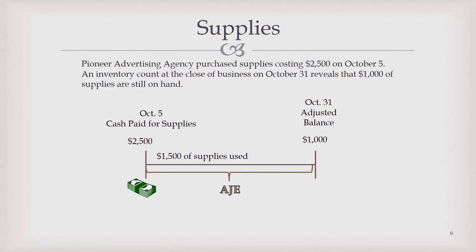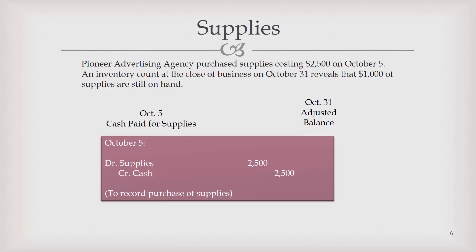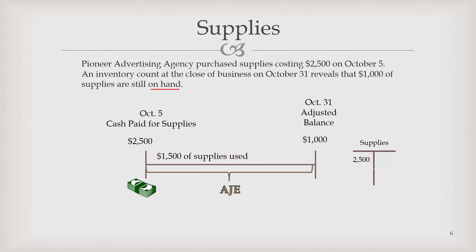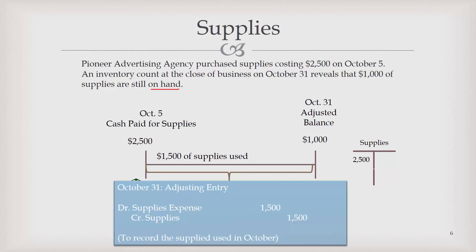Let's look at supplies. Pioneer Advertising Agency purchased supplies costing $2,500 on October 5th. On that date, they would have debited supplies and credited cash — supplies is an asset. Then on October 31, they counted and found they still have $1,000 worth of supplies on hand, meaning those are the supplies sitting in the supply closet that have not been used. We need to adjust the asset down to $1,000, which means they used up $1,500 worth of supplies during October. Our adjusting entry would be a debit to supplies expense and a credit to supplies, leaving an ending balance of $1,000.